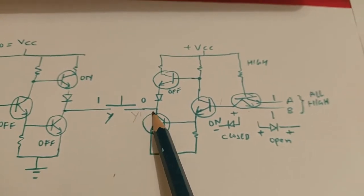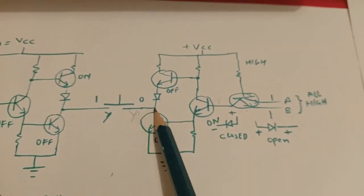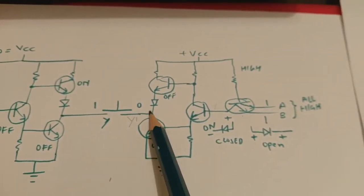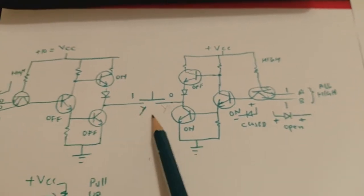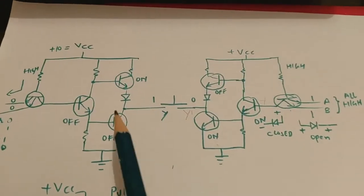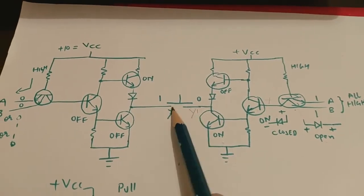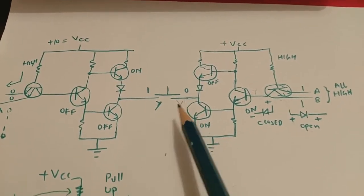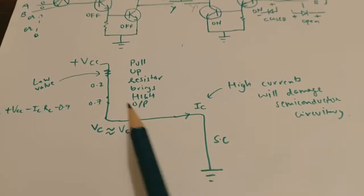Now if we connect both these circuits and this situation arises, then what will be the equivalent situation? This is the equivalent situation. What will happen is that this pull-up resistor will pull up the output voltage.